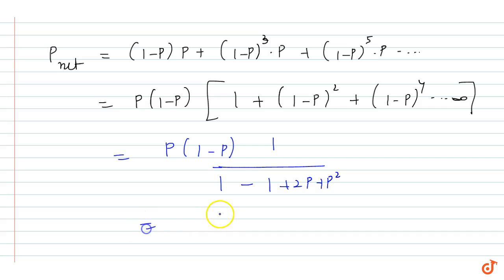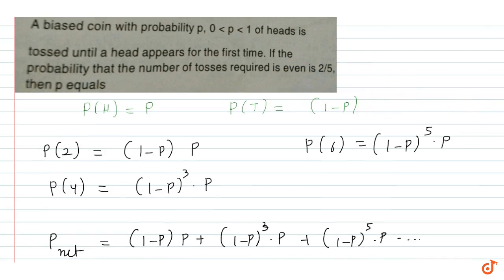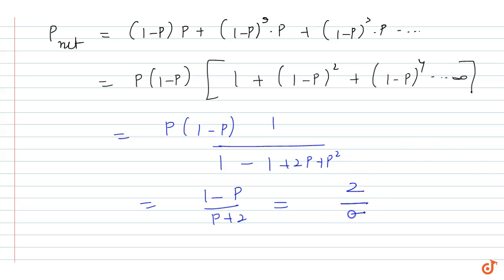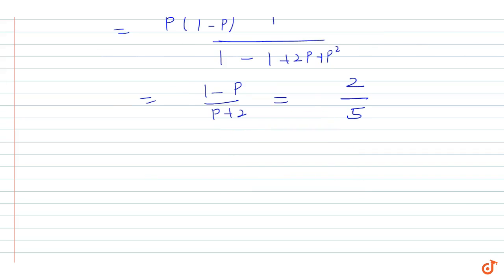Simplify, then value, here is 1 minus 1 cancel out 1p. If we take comma, then p cancel out, and then 1 minus p upon p plus 2. Now we have given the probability is equal to 2 by 5, so here we have value 2 by 5 equal. Now see, p, if we cross multiply, 5 minus 5p is equal to 2p plus 2. To simplify, 7p ki value, 7p equal to 3. To probability head is equal to 3 by 7.